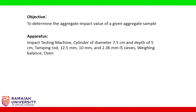Apparatus required: Impact testing machine, cylinder of diameter 7.5 cm and depth of 5 cm, tamping rod, 12.5 mm, 10 mm and 2.36 mm IS sieves, weighing balance and oven.